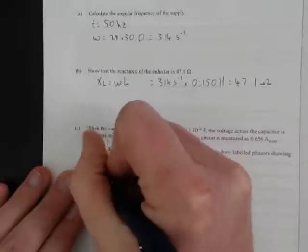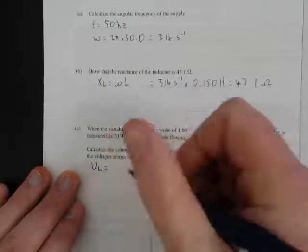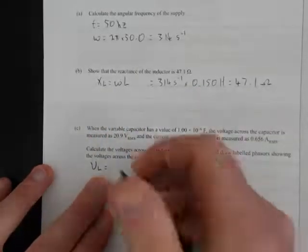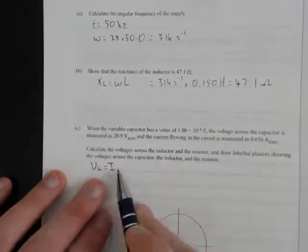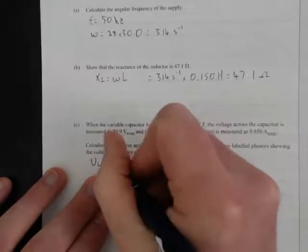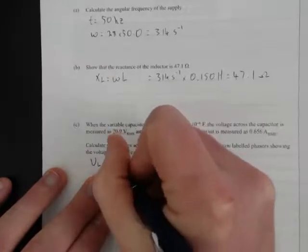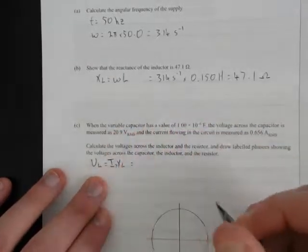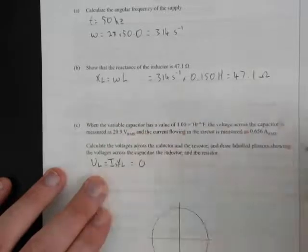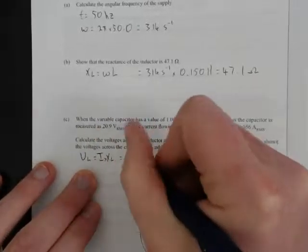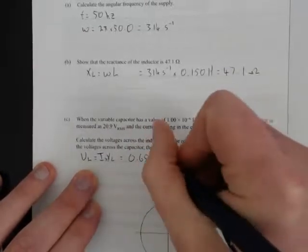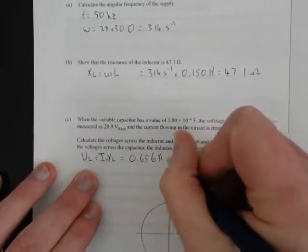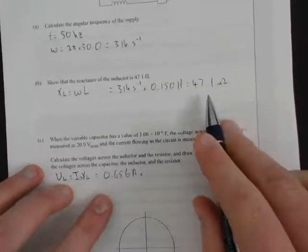Voltage through the inductor, using Ohm's law: instead of V = IR, because inductors don't have normal resistance, they have reactance, it's V = I × XL. This equals the current 0.656 amps times the reactance, which we just worked out.